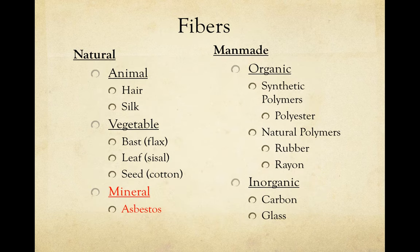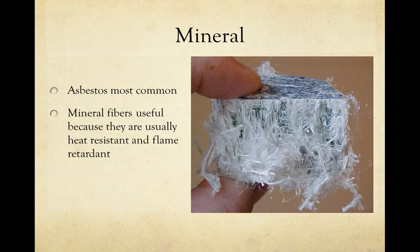The last category of natural fiber is mineral fibers. Asbestos is made up of naturally occurring silicate minerals, so asbestos is actually a type of mineral fiber. Asbestos used to be very popular in construction materials because it was heat resistant and flame retardant, but unfortunately we now know that this type of mineral fiber is a health hazard.